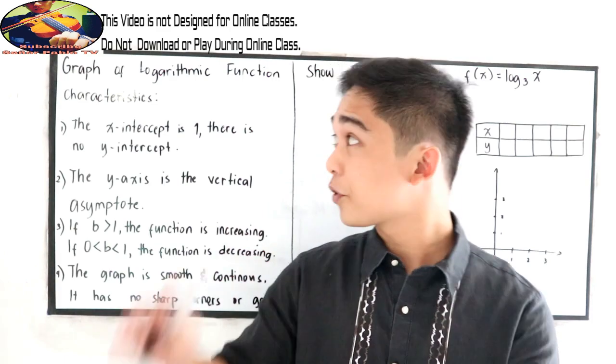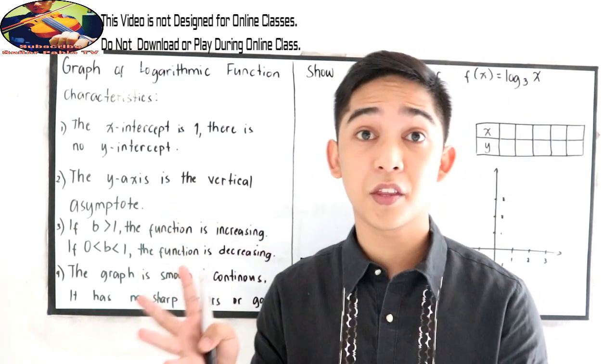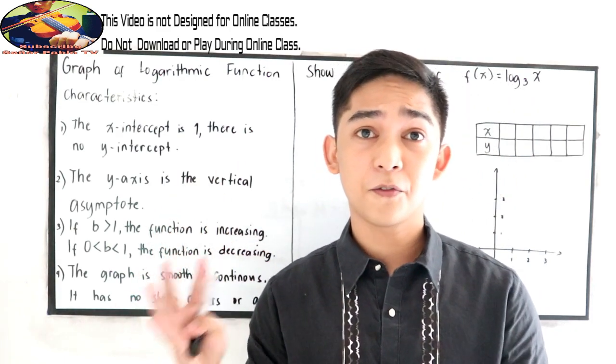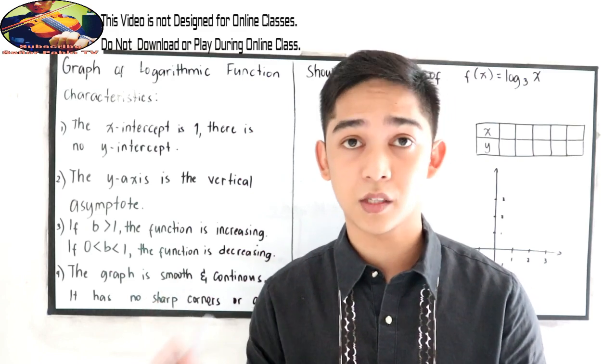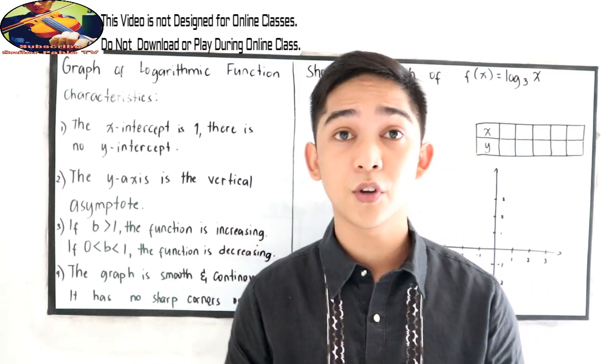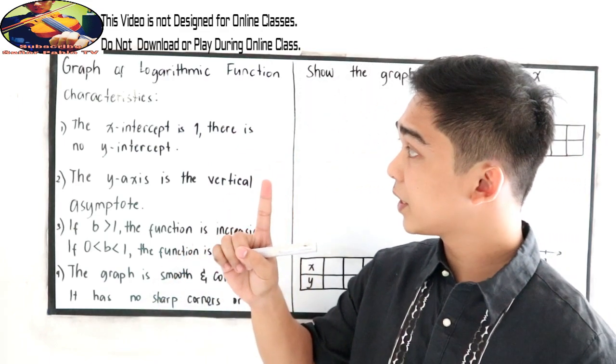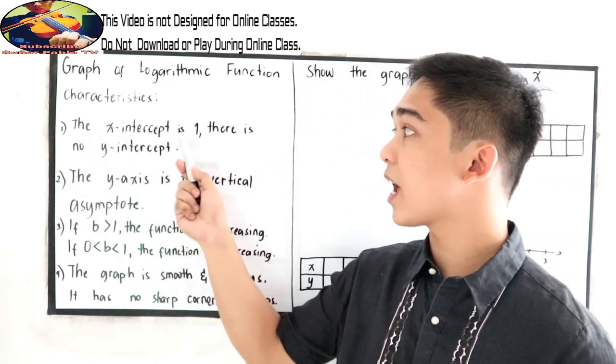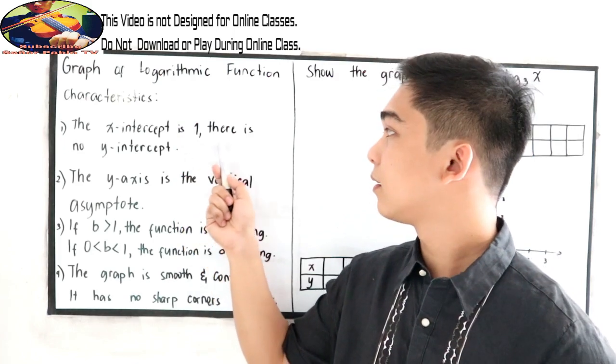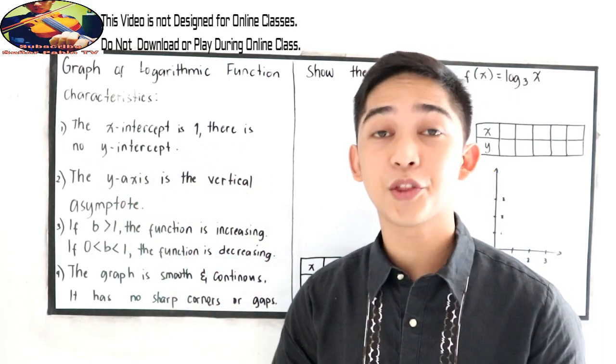In order for us to understand the graph of logarithmic functions, let us first discuss the characteristics of the graph of logarithmic function. The first one is the x-intercept is 1. There is no y-intercept.